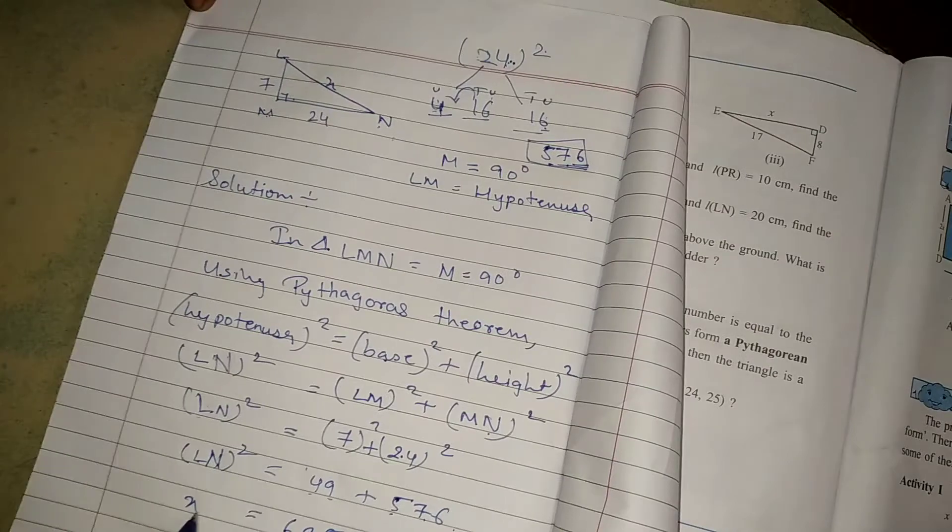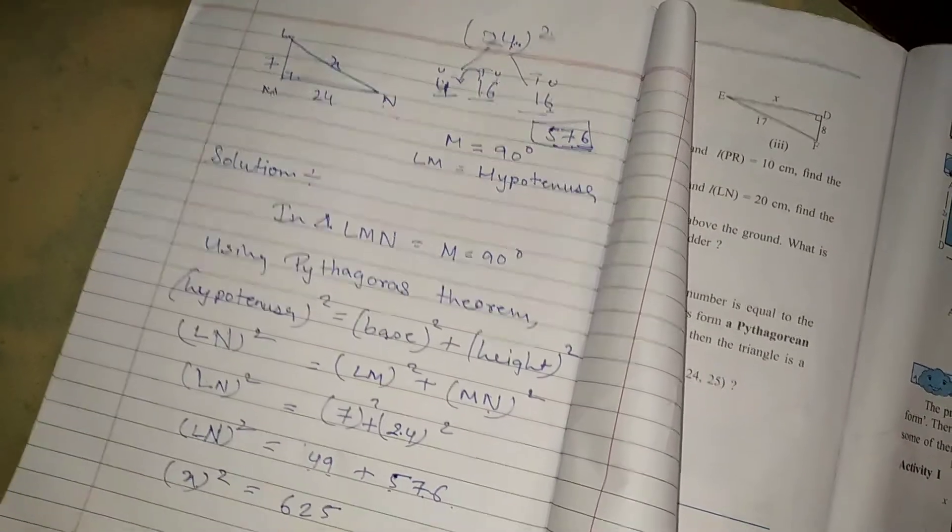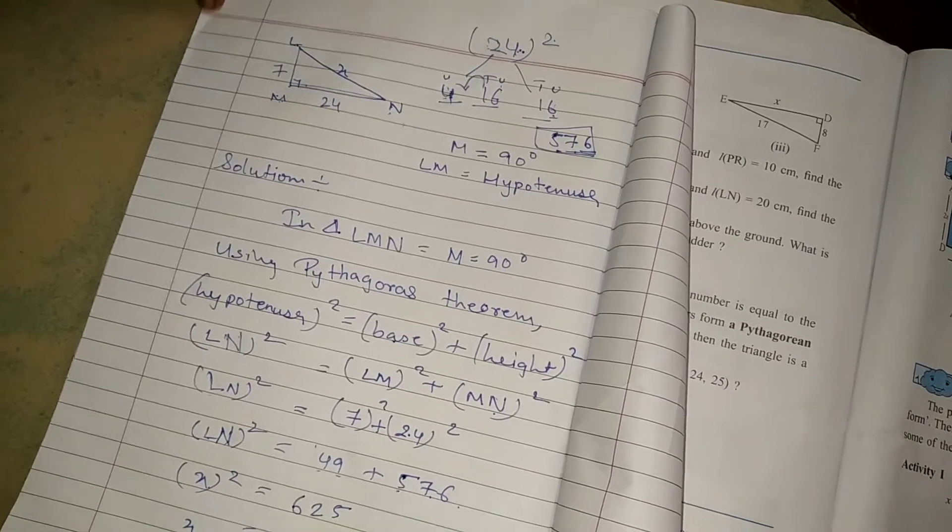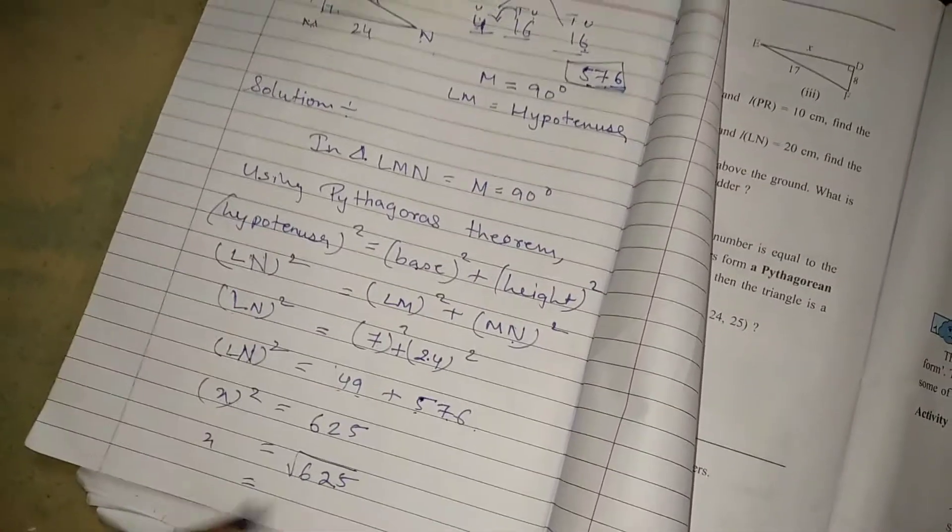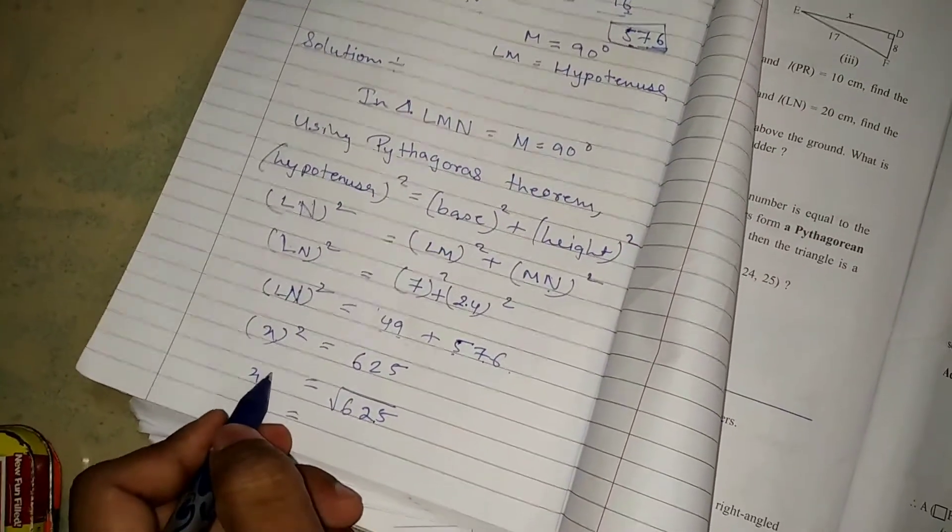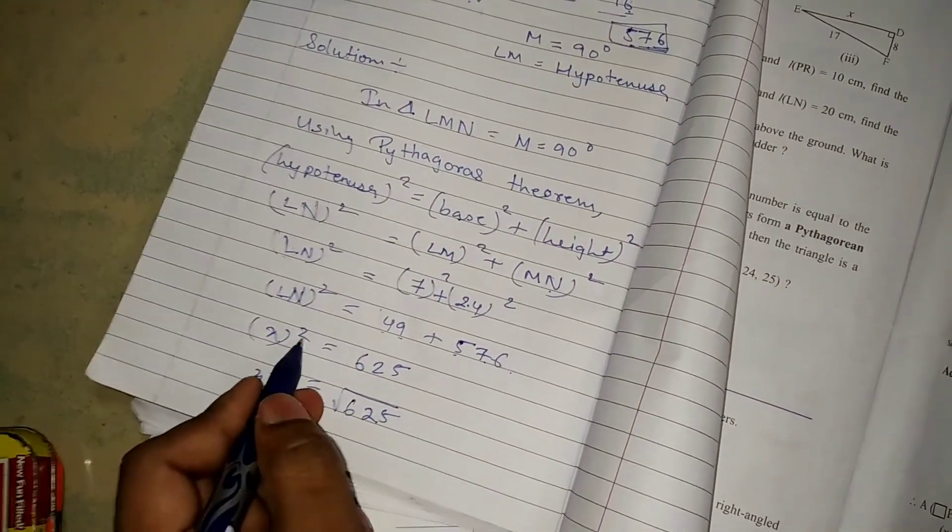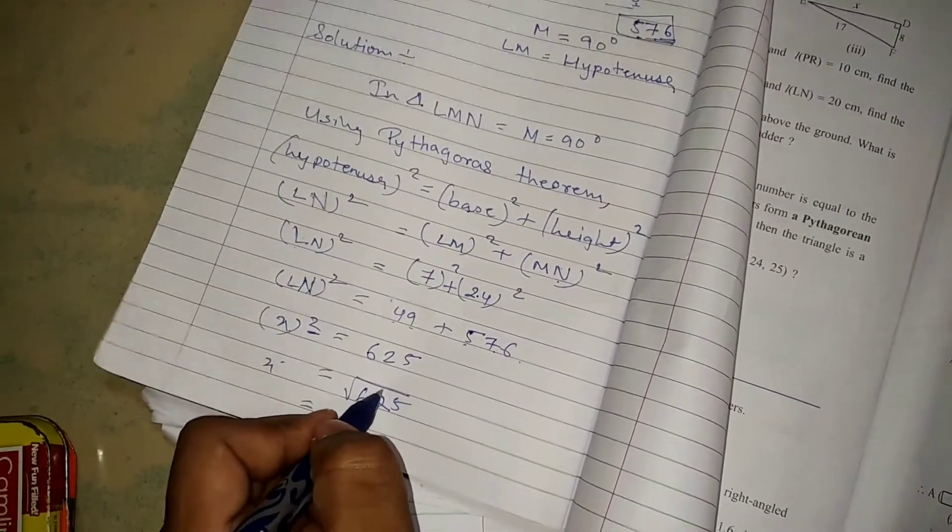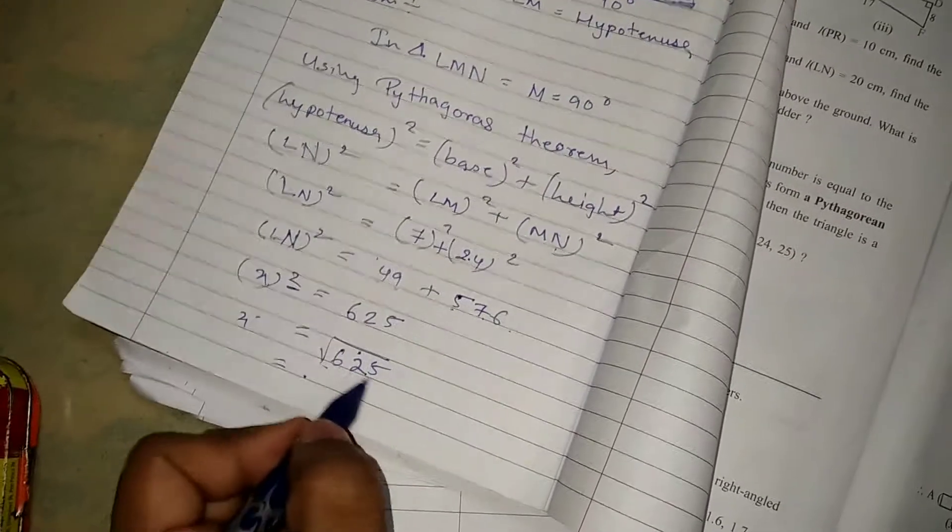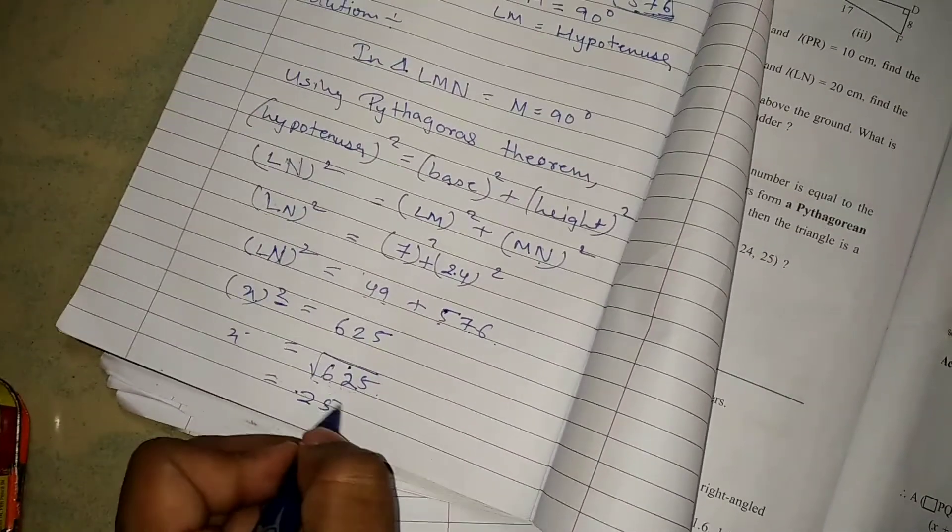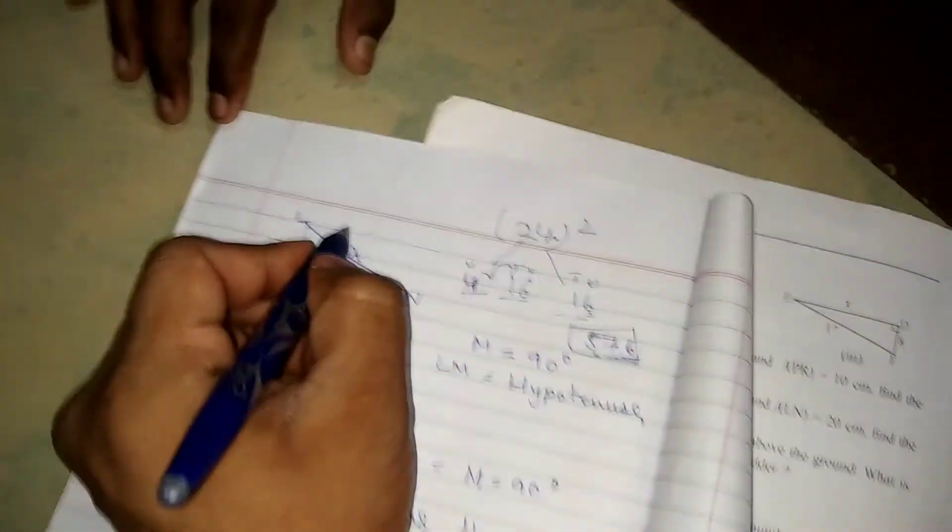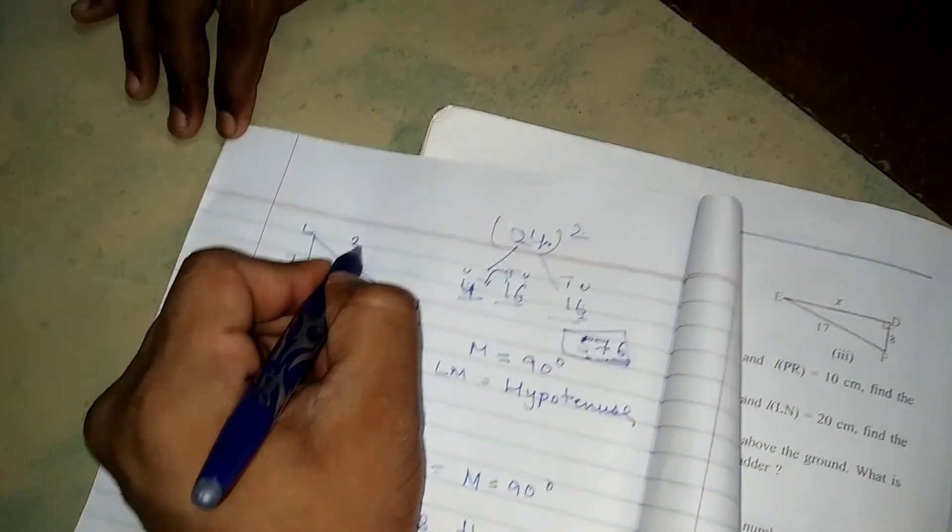LM is your X. So X squared equals 625. This square will come here as root. You have to find the root here. The root of 625 is 25. X is 25. X value got it, 25.